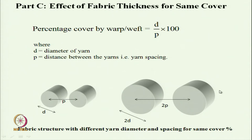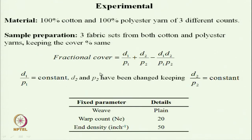That is how, keeping the same cover factor or percent cover, the thickness of fabric can be changed. The fractional cover is given by (D1/P1) + (D2/P2) − (D1·D2)/(P1·P2), where D1/P1 is kept constant (warp), and D2/P2 (weft) is also kept constant. The fixed parameters are warp count and ends density.